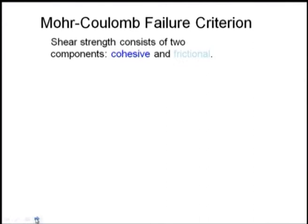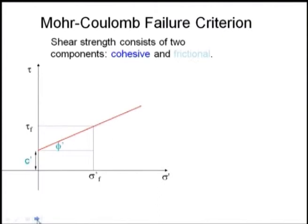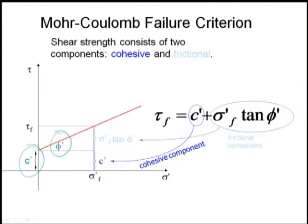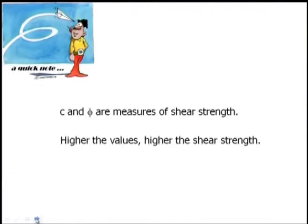The Mohr-Coulomb failure criterion shows shear strength consisting of two components: cohesive and frictional. τ_f = c' + σ' tan φ_m, where c' is the cohesion component and σ' tan φ_m is the frictional component. A quick note: c and φ are measures of shear strength — higher values of c and φ mean higher shear strength.